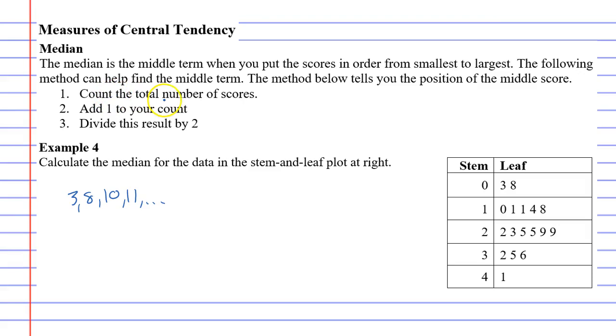So first of all, it says count the total number of scores. So the number of scores, I've got 1, 2, 3, 4, 5, 6, 7, 8, 9, 10, 11, 12, 13, 14, 15, 16, 17 scores.